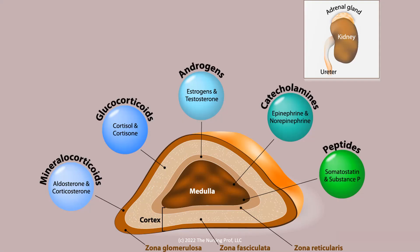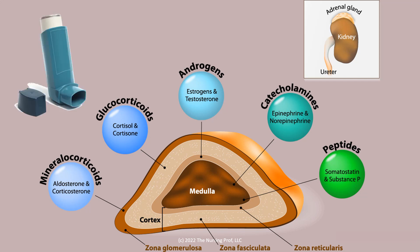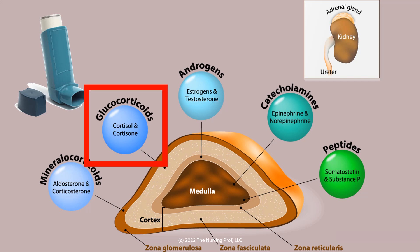However, those inhaled steroids as well as oral steroids can have effects on other parts of the body beyond just the lung. Looking at the adrenal cortex and adrenal medulla — here's our adrenal gland sitting on top of the kidney. The picture in the upper right hand corner illustrates its position on the kidney. The adrenal gland produces many different chemicals: mineralocorticoids, glucocorticoids, androgens, catecholamines, and peptides.